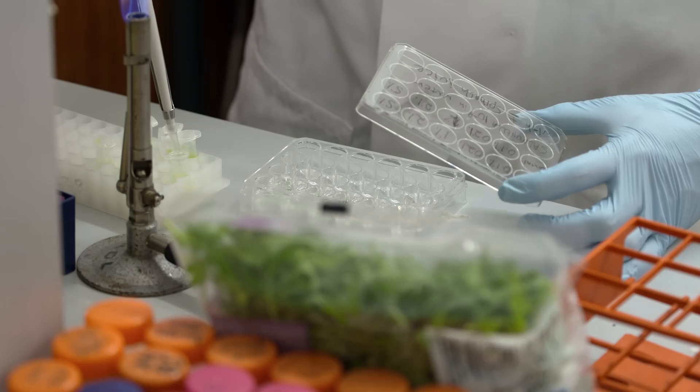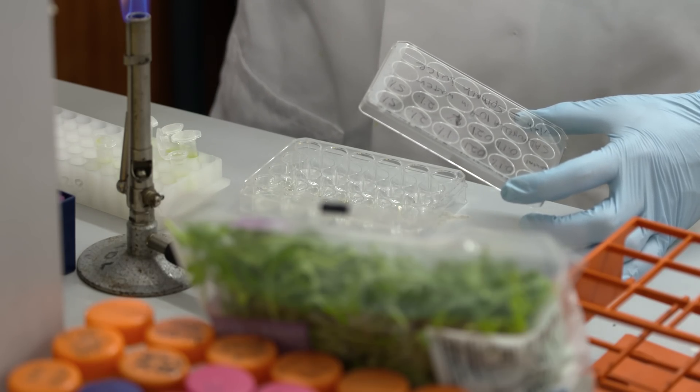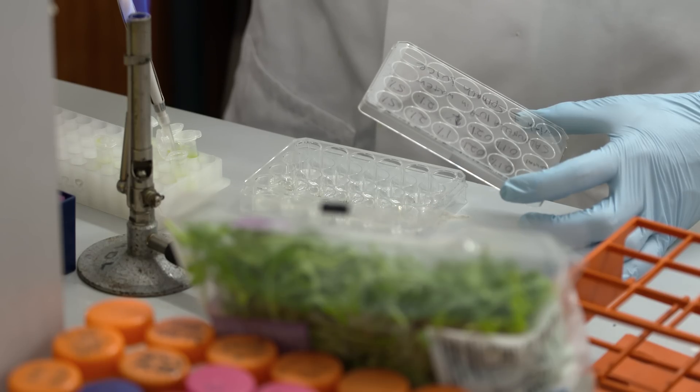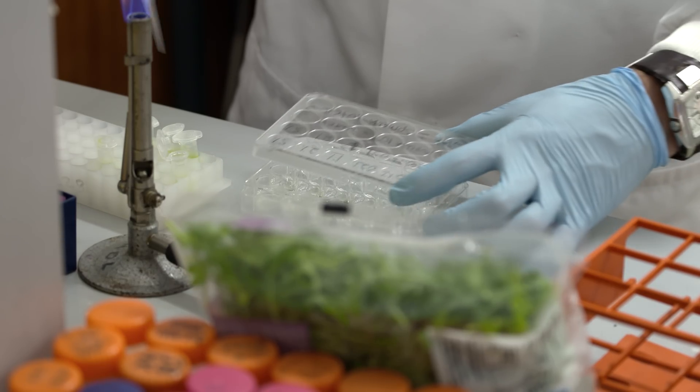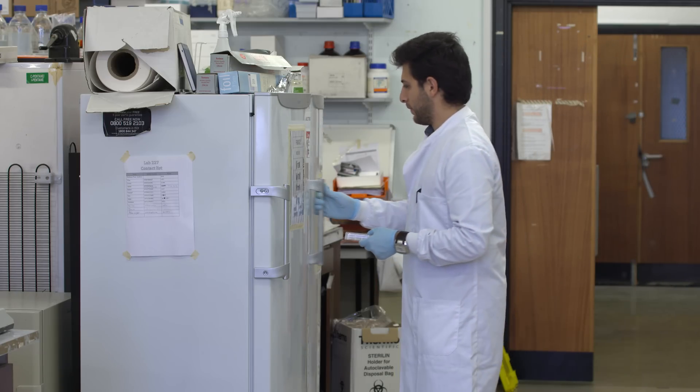Now all the textbooks say that foodborne pathogens like salmonella prefer the temperature of their host, which is 37 degrees, but what we found is that exposure to salad juices causes the salmonella to grow within the refrigerator.